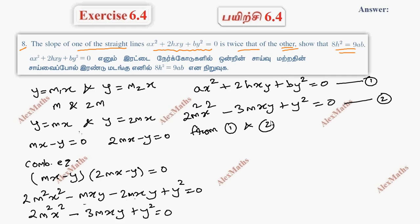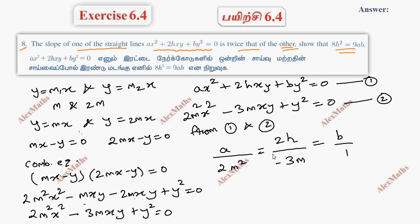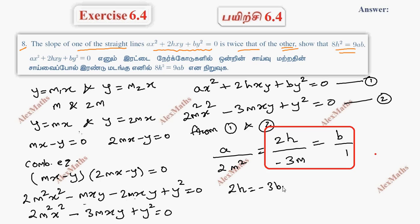From equations 1 and 2, comparing coefficients: 2H = −3BM, so M = −2H / 3B.